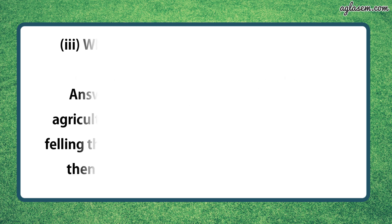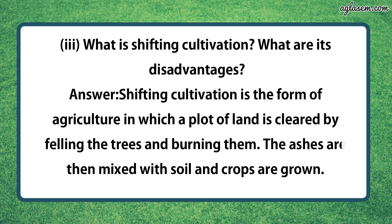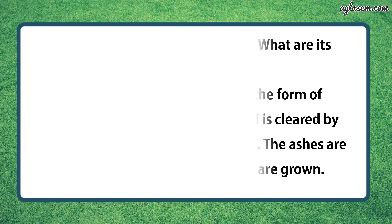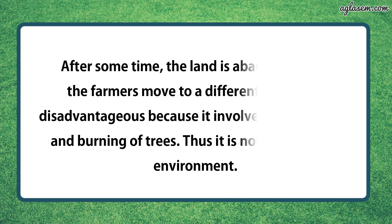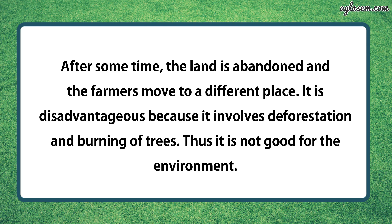Third part says, what is shifting cultivation? What are its disadvantages? So the answer is, shifting cultivation is the form of agriculture in which a plot of land is cleared by felling the trees and burning them. The ashes are then mixed with soil and crops are grown. After some time, the land is abandoned and the farmer moves to a different place. It is disadvantageous because it involves deforestation and burning of trees, and thus it is not good for the environment.